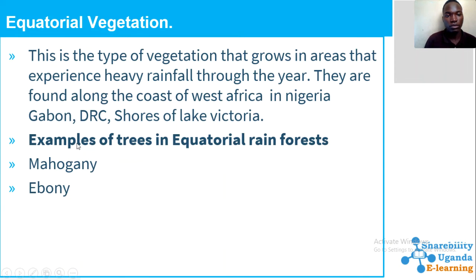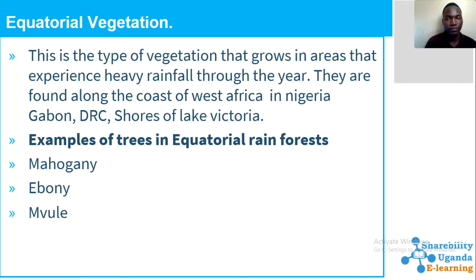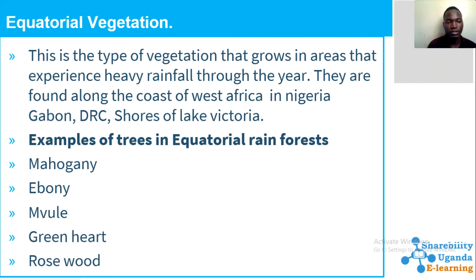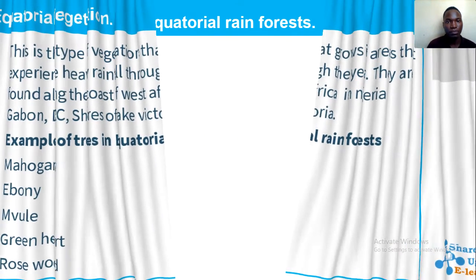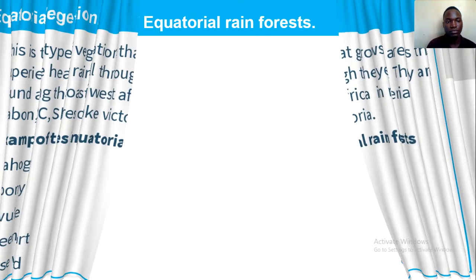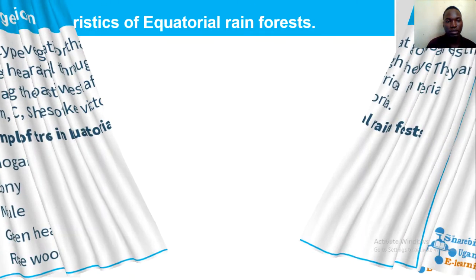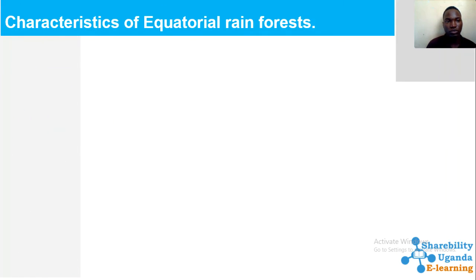Examples of equatorial rainforest trees include the mahogany, the ebony, the mayfuly tree, the green heart, and rosewood. Those are some of the examples of equatorial rainforests.